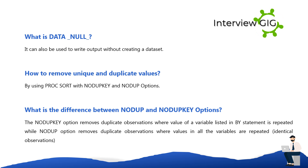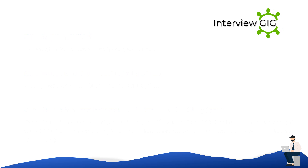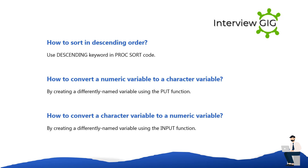What is the difference between NODUP and NODUPKEY options? The NODUPKEY option removes duplicate observations where the value of a variable listed in the BY statement is repeated, while the NODUP option removes duplicate observations where values in all the variables are repeated — identical observations. How to sort in descending order? Use the DESCENDING keyword in PROC SORT code.